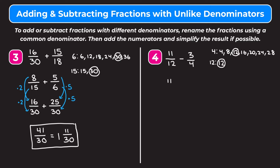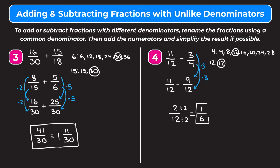Since our first fraction already has a denominator of 12, we keep it as is. We need to change 3 fourths to have a denominator of 12. 4 times 3 is 12, so we multiply the numerator by 3 as well. 3 times 3 gives us 9. So now we have 11 twelfths minus 9 twelfths. Subtracting: 11 minus 9 is 2, giving us 2 twelfths. Simplifying by dividing by 2: 2 divided by 2 is 1 and 12 divided by 2 is 6. So we get 1 sixth as our answer.